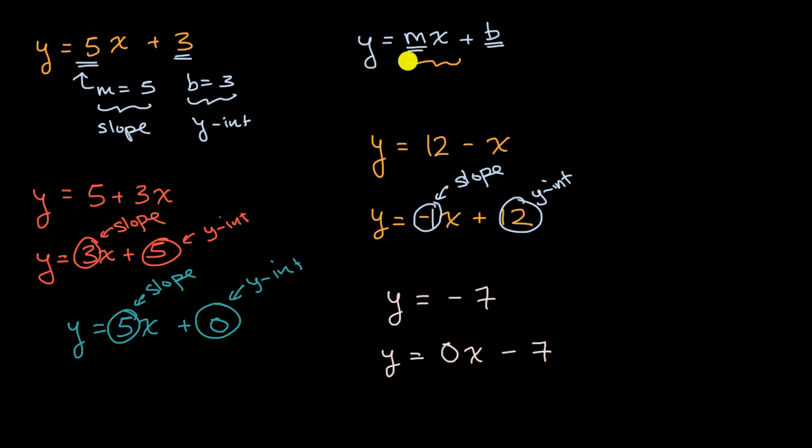And so now, it looks just like what we have over here. And you might recognize that our y-intercept is negative 7. And our slope is the coefficient on the x term. It is equal to 0. And that makes sense. For a given change in x, you would expect zero change in y. Because y is always negative 7 in this situation.